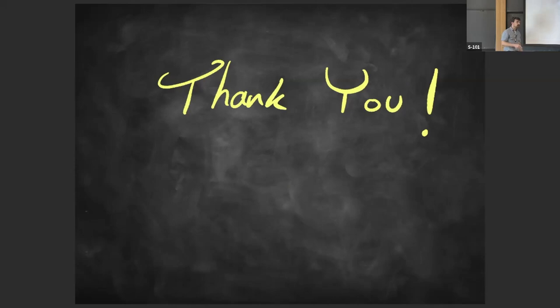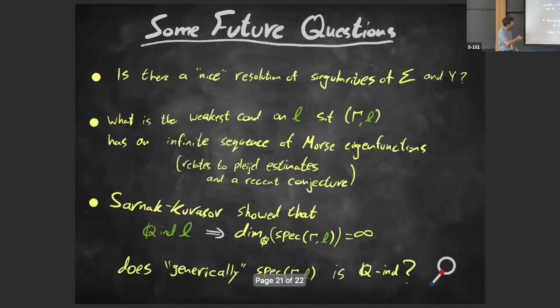Question from the audience: is there an interesting way to make sense of the monodromy of eigenvalues so you can track metrics and eigenfunctions? The speaker replies: that's exactly where I'm aiming with the resolution of singularities — you need to track them, and once you hit a singularity you're in trouble. You want to understand what happens when you go around the singularity.